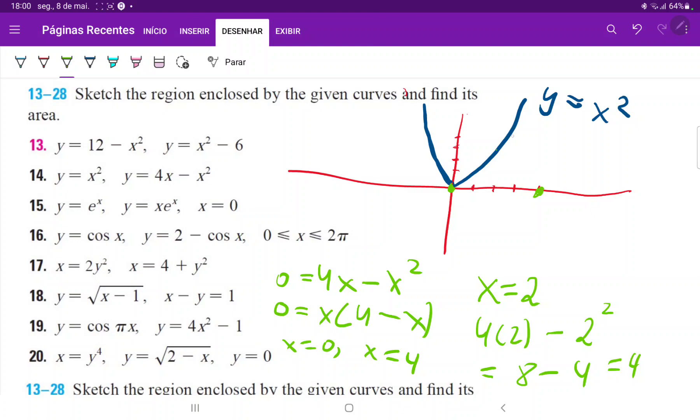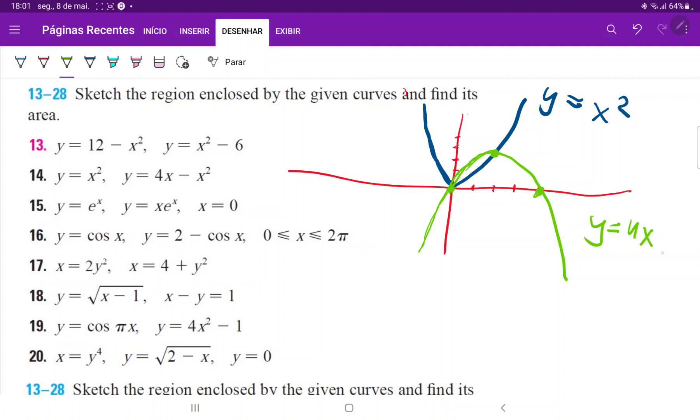They do have this point in common because 2 squared is 4. So this was a very terrible drawing, but we can kind of see where they intersect. Let me just erase this so that we have enough space to work.